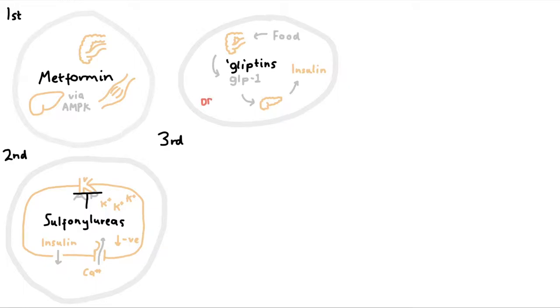But after its release, GLP-1 is quickly degraded by an enzyme called dipeptidyl peptidase 4, or DPP-4. The gliptins inhibit this enzyme and thus increase the presence of GLP-1.